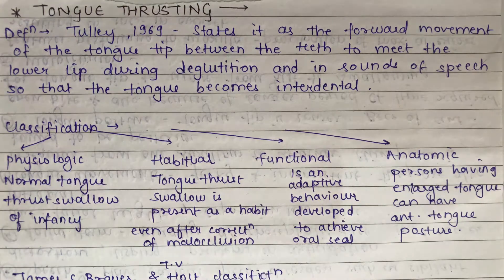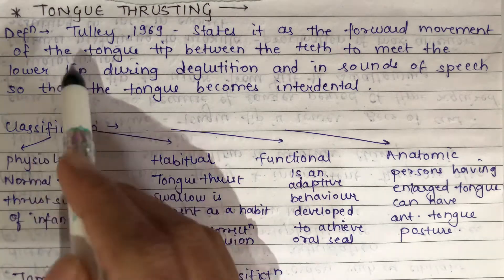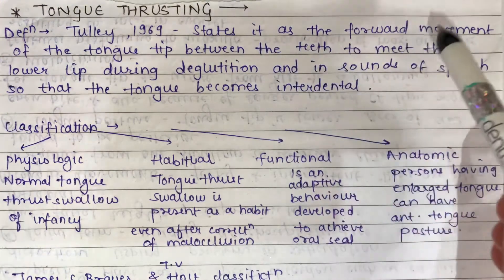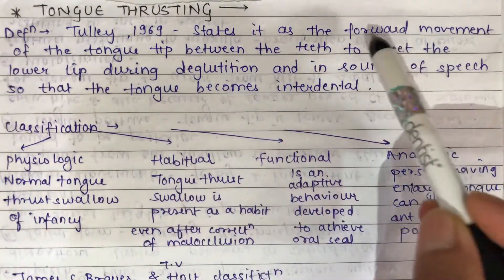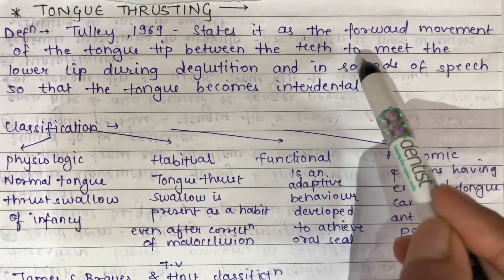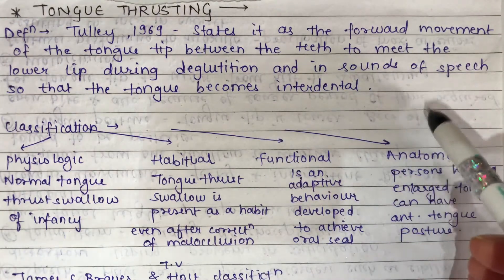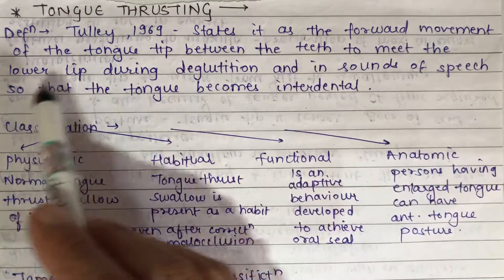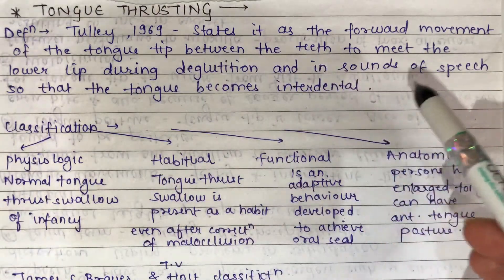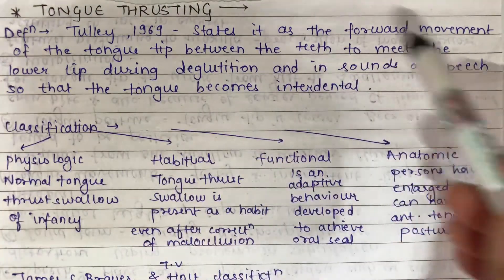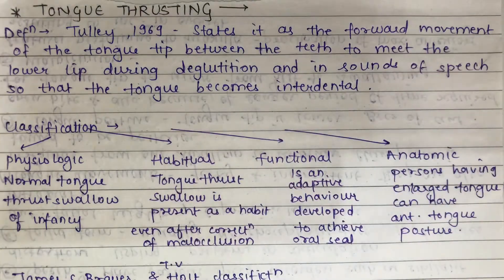The definition of tongue thrusting was given by Tilly in 1969: it is the forward movement of the tongue tip between the anterior teeth to meet the lower lip during deglutition and during speech, such that the tongue becomes interdental.